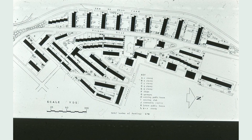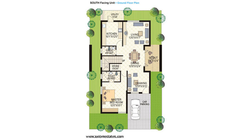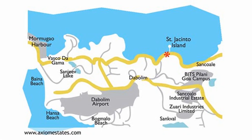Before we dive into the details of estate planning, let's first define what it is. Estate planning is the process of anticipating and arranging for the disposal of an estate during a person's life. It involves the management of assets and the distribution of wealth after a person's death. Estate planning is not just for the wealthy — it's for anyone who wants to ensure that their assets are distributed according to their wishes, and that their loved ones are taken care of after they are gone.